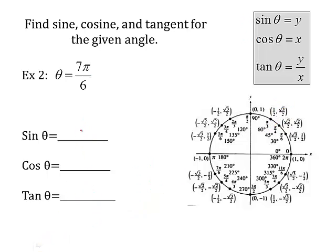Let's try another one. Find sine, cosine, tangent for the given angle at 7π over 6. So look at your unit circle and find the angle 7π over 6, right here. So sine, we said, is the y coordinate. So it's negative 1 half. Cosine is the x coordinate. So it's negative square root of 3 over 2. Tangent is the y divided by the x.